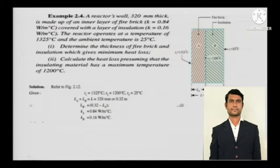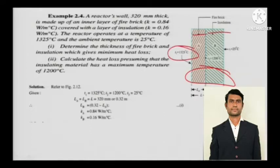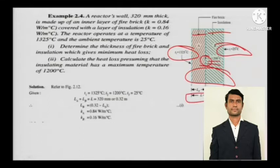You can see the two layers of the composite wall — one is the firebrick, one is the insulation. This is the temperature here, this is the temperature here, and this is the intermediate temperature here. The thickness is shown, and we need to determine the thickness of the firebrick. The insulating material has a maximum temperature of 1200 degrees Celsius.